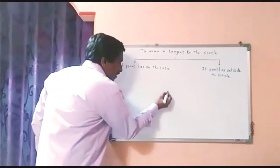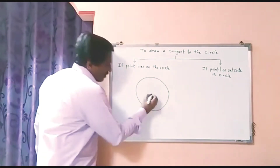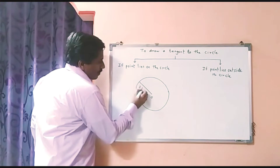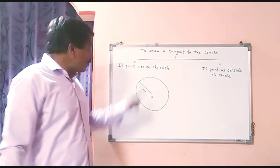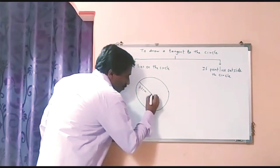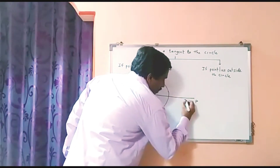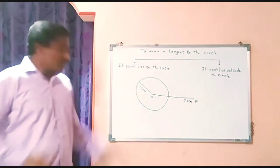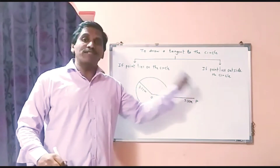Suppose this is a circle with a given radius and center, and let the radius be 3.1 centimeters. Now, it is given that the distance of the point from the center is 7.5 centimeters. From the center, the point lies at a distance of 7.3 centimeters. Since its distance is greater than the radius, definitely this point will lie outside the circle.